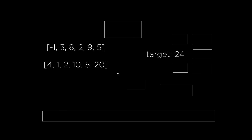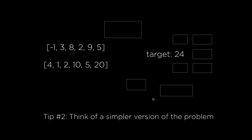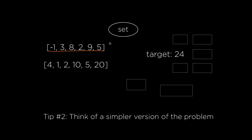Here's the next step — and by the way, these are the actual steps I personally took to solve this problem. After thinking of the brute force solution, I started thinking of a simpler version of the problem. The original problem was to find a pair of numbers whose sum is closest to the target. So I thought: maybe a simpler version would be to find a pair whose sum is exactly equal to 24. Here's the solution I came up with for that simpler version: first, initialize an empty set, then go through the elements in the first array and put all of them into the set.